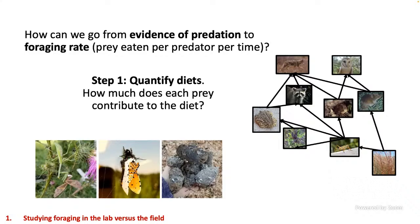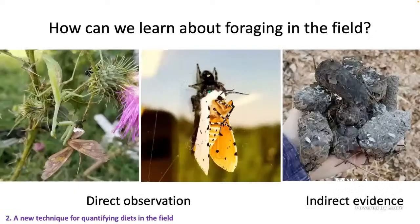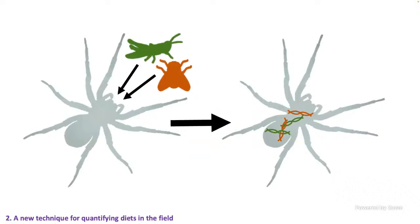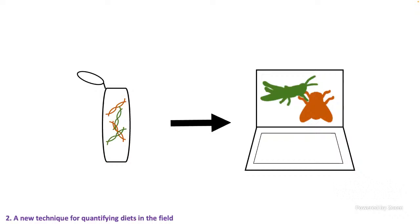The first step is to actually quantify diets in the field — how much does each prey actually contribute to the diet of any given predator. This seems easy but can be surprisingly hard when working with indirect evidence. A newer form of indirect evidence is DNA metabarcoding. When a predator like a wolf spider eats prey like grasshoppers or flies, it ingests that tissue and that DNA. For a certain amount of time, that DNA persists in the predator's body, so we can do DNA extractions, sequencing, and bioinformatics to figure out who those prey were.